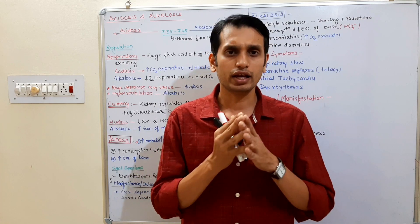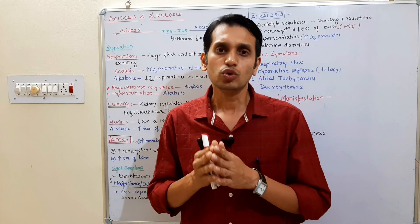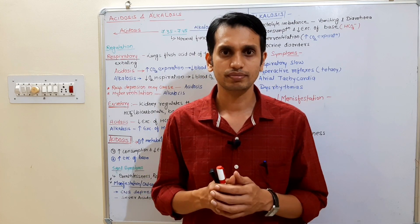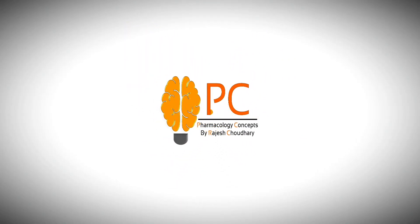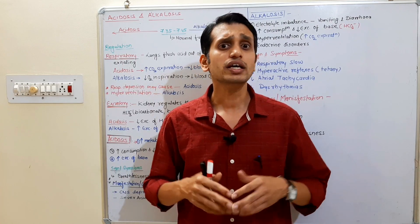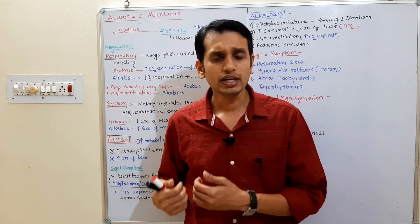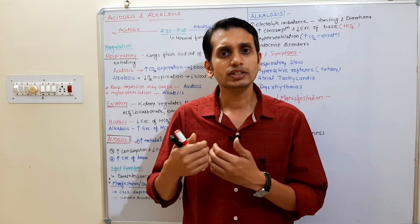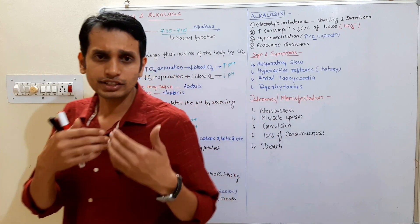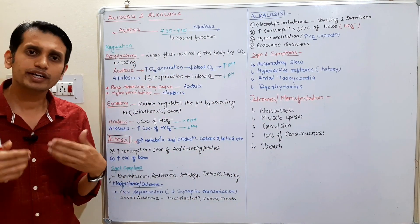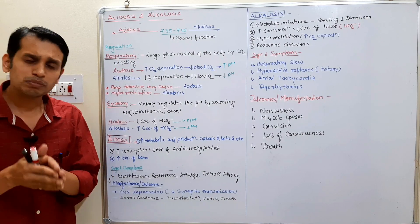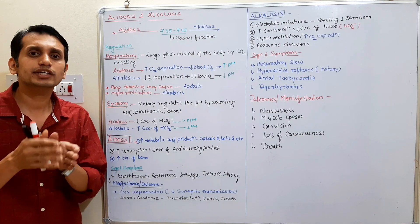In this video, we will talk about alkalosis and acidosis — what is the effect on our body. Acidosis means increase in the acidity of the body, and alkalosis means increase in the basic or alkaline nature within the body. If the body is in an acidic state, we say acidosis. If the body is in a basic state, we say alkalosis. We determine this by the pH.